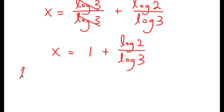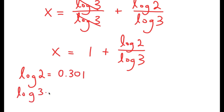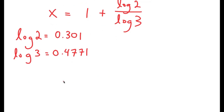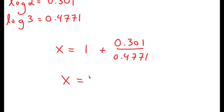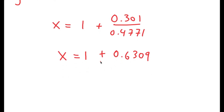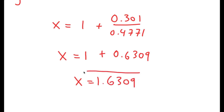Now, log 2 is equal to 0.301 and log 3 is equal to 0.4771. So I get x is equal to 1 plus 0.301 over 0.4771. And 0.301 over 0.4771 is 0.6309. So I have x is equal to 1 plus 0.6309, which is equal to 1.6309. So this is my solution.